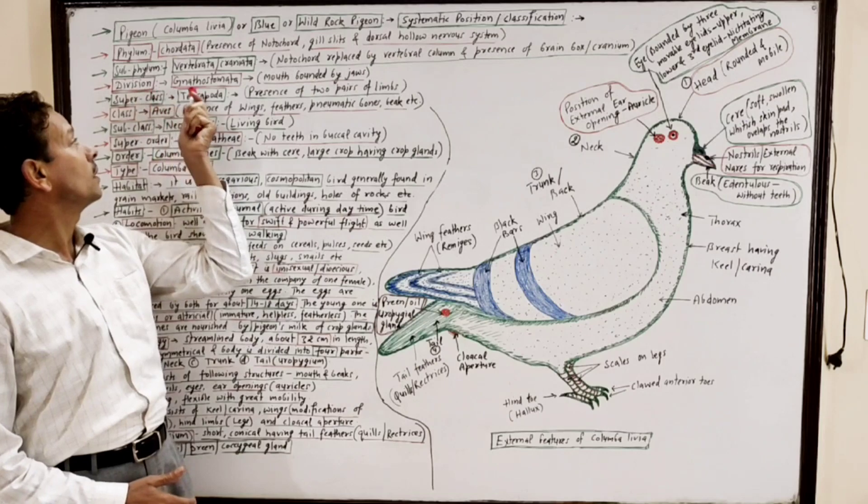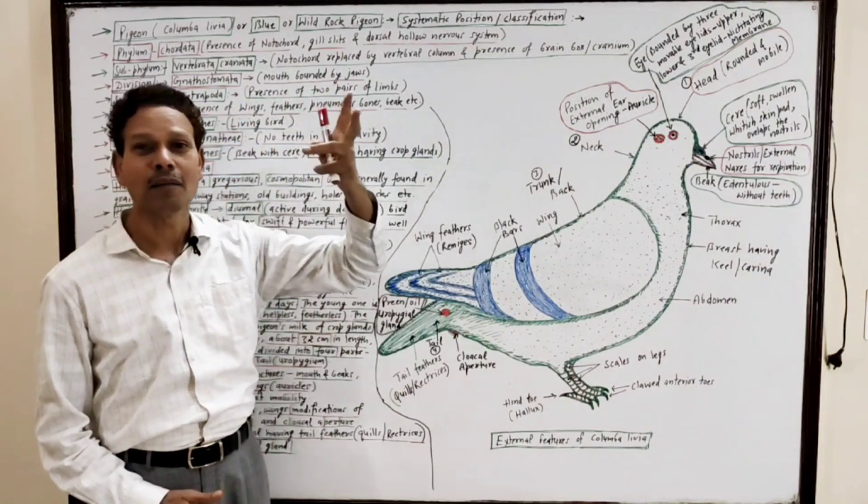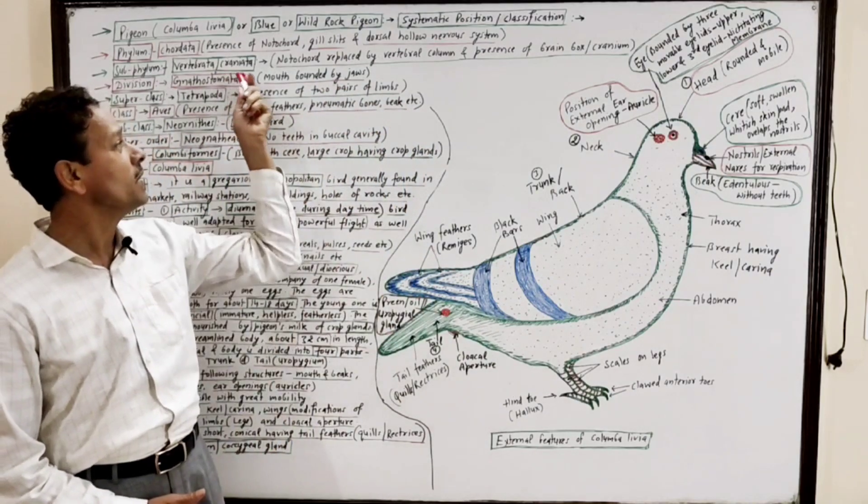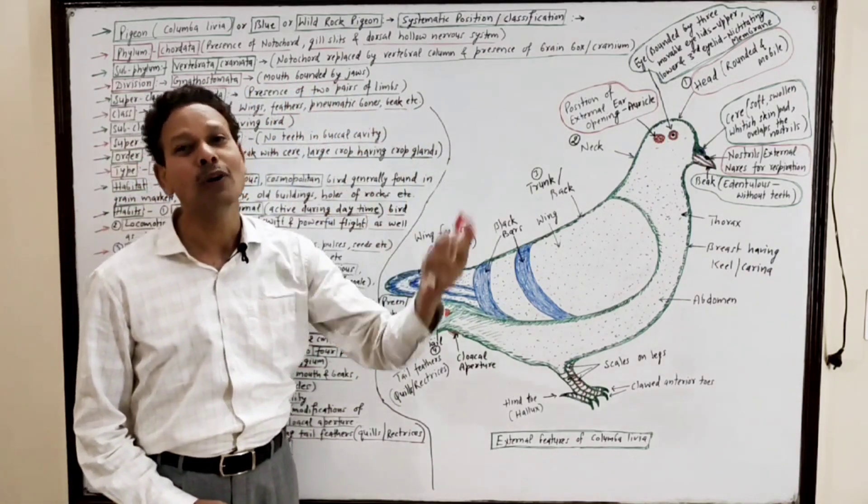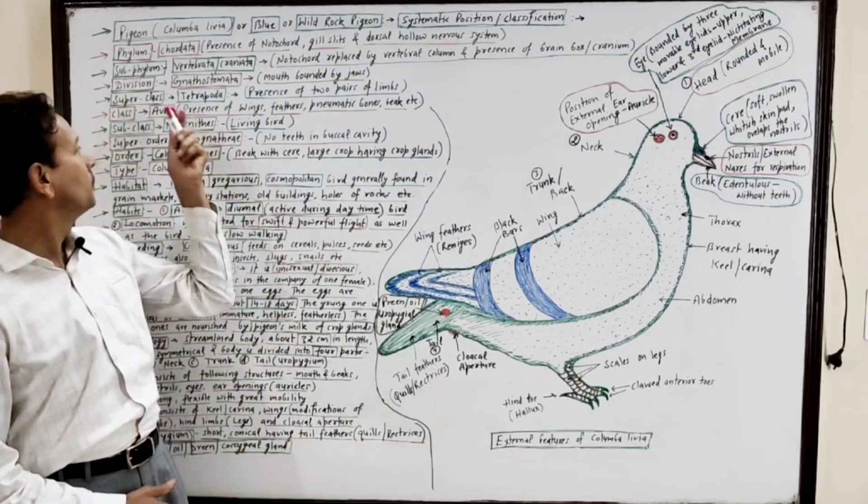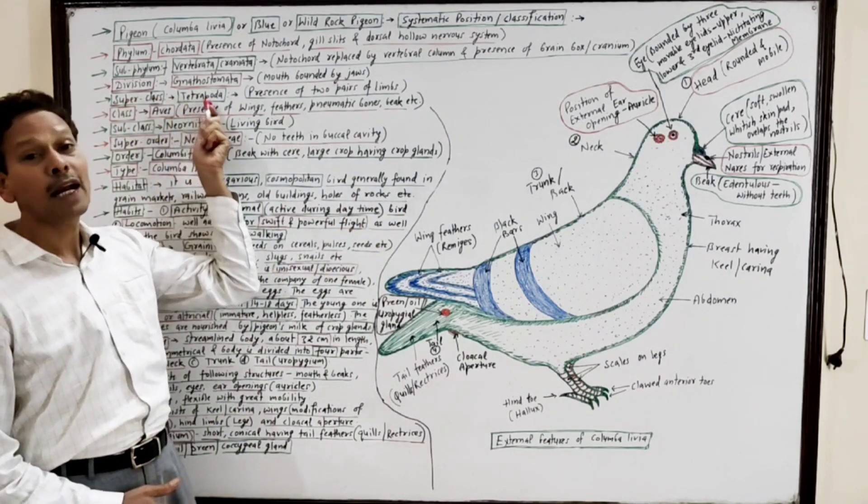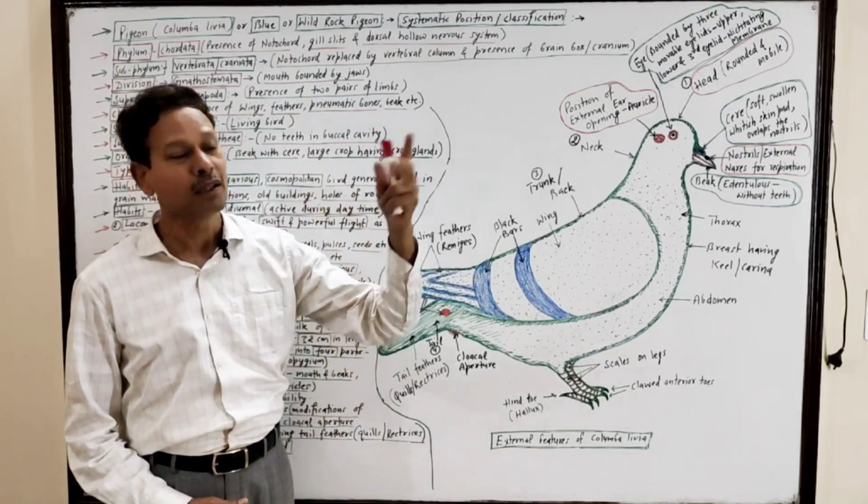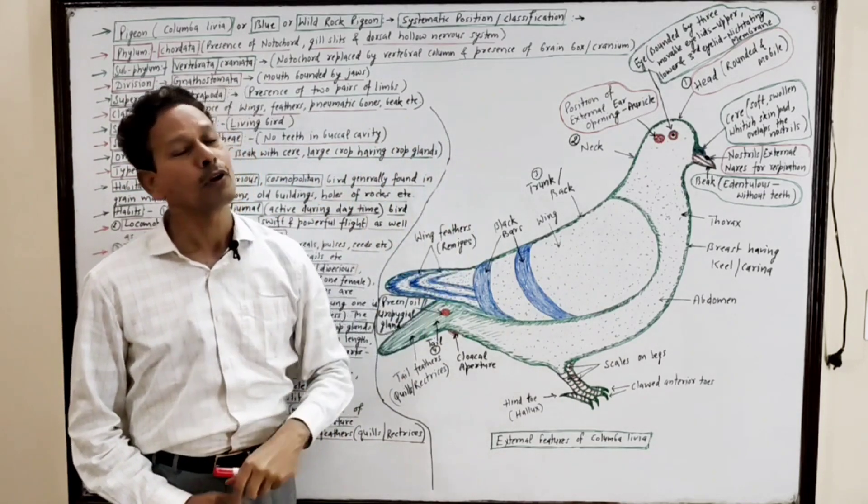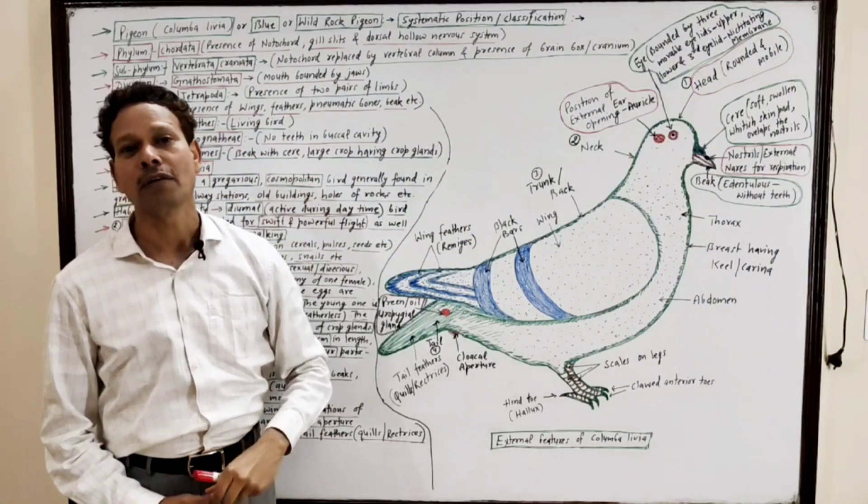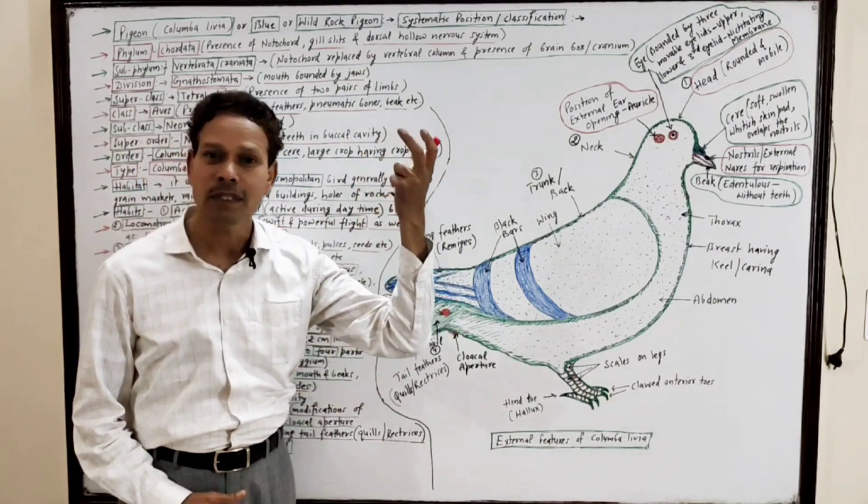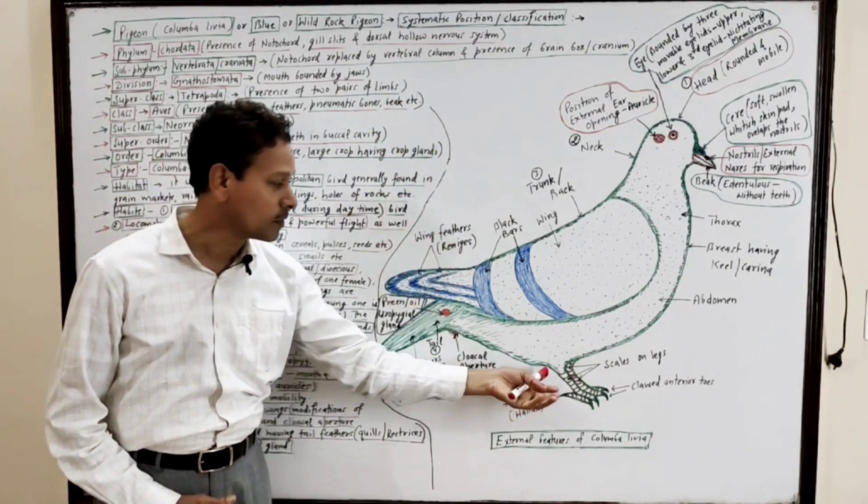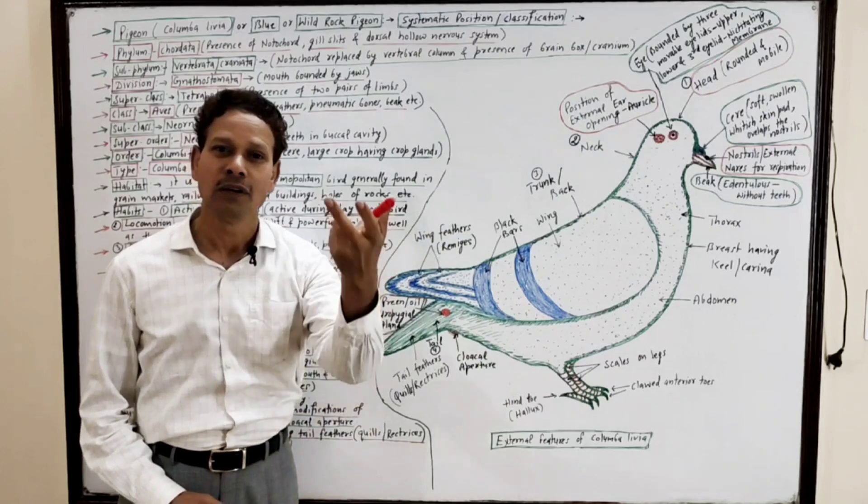Division Gnathostomata - gnatha means jaws, stoma means mouth, meaning the mouth is bounded by jaws. Superclass Tetrapoda - tetra means four, poda means limbs, meaning the bird possesses two pairs of limbs. Forelimbs which get modified into wings and the hind limbs which are well adapted for walking.